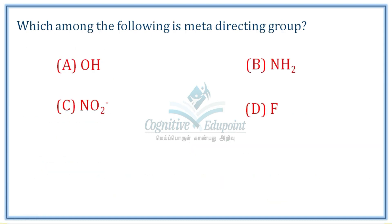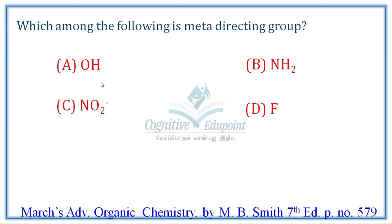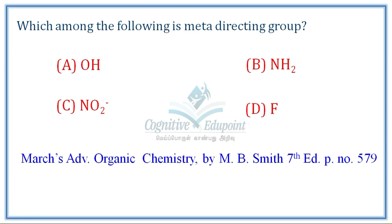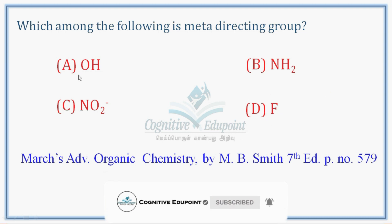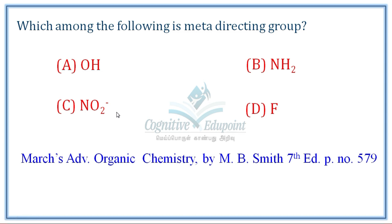Next question: Which among the following is the meta-directing group, and which deactivates the ring? Hydroxyl has a lone pair that activates the ring. NH2 has a lone pair involved in activation of the ring. Fluorine deactivates the ring through electron withdrawal. The nitro group is the meta-directing group — Option C is the correct answer.